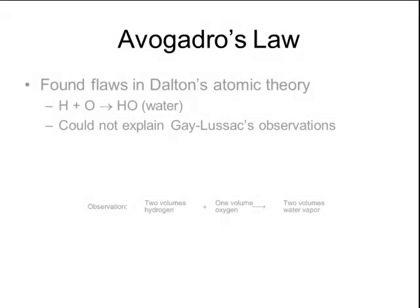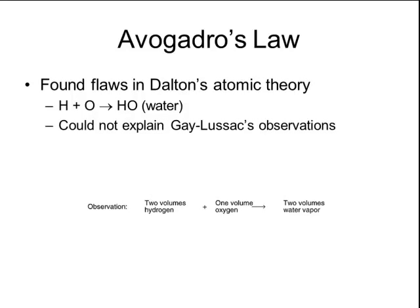Shortly after Gay-Lussac proposed his second gas law, Avogadro realized that some of Gay-Lussac's observations could not be explained using Dalton's atomic theory. The first flaw he found was that, according to John Dalton, all gases existed as monatomic atoms — for example, hydrogen gas was simply H, and oxygen gas was simply O. Dalton also proposed that one molecule of one gas plus another molecule of another gas would always make one molecule of the product. But Avogadro realized these two explanations could not explain Gay-Lussac's observations.